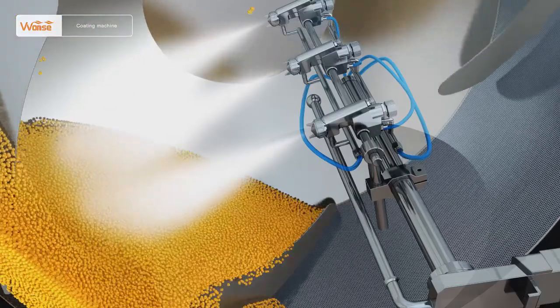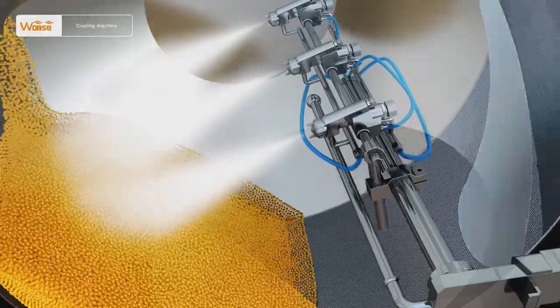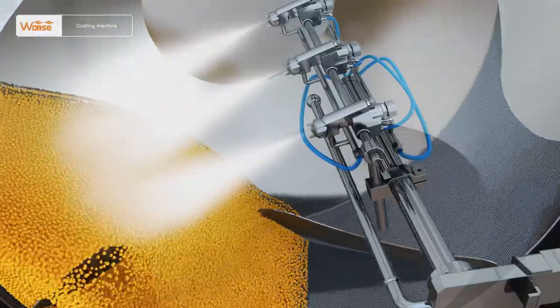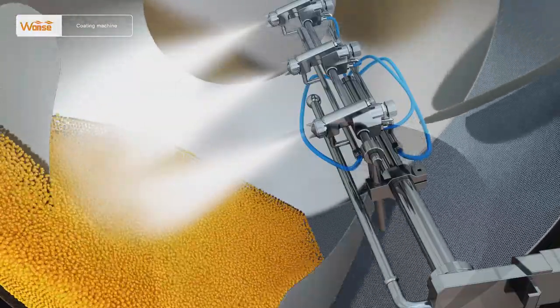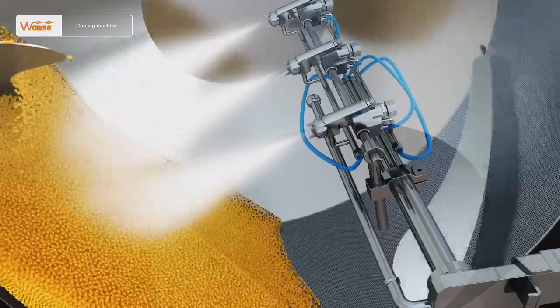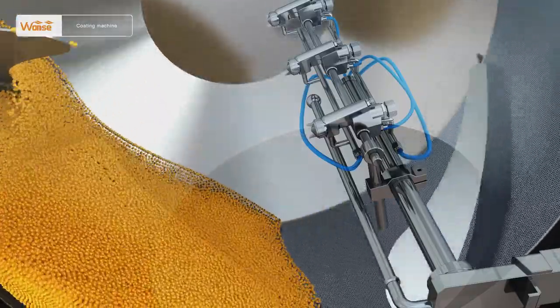Sixth, when the coating liquids are almost used up, observe if the surfaces of tablets or pills are even. Stop spraying when the surfaces become fine. Seventh, first stop the spray gun.